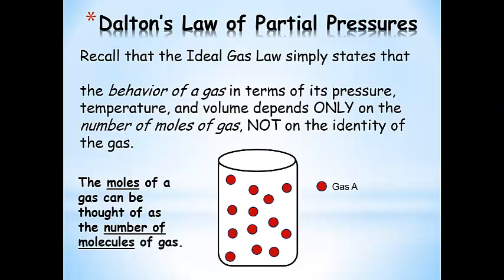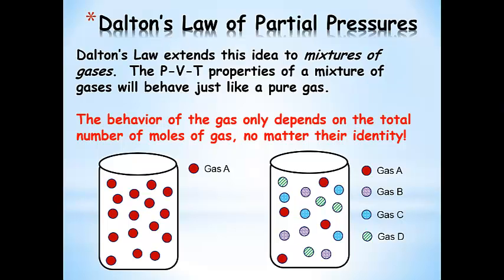To visualize this, you can think of the moles of a gas as the number of molecules. Basically, the moles of gas is just the amount of gas we have. Now Dalton's Law extends this idea to mixtures of gases. It says that the PVT — the pressure, volume, temperature properties of a mixture of gases — will behave just like a pure ideal gas, based on the idea that gas behavior depends on the total number of moles, not what it is.